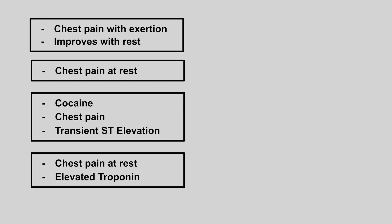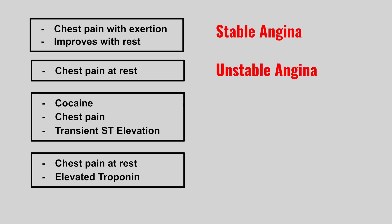The next one is chest pain with exertion that improves with rest — this is stable angina. The next one is chest pain at rest — this is unstable angina. The next one is someone who uses cocaine, has chest pain, and transient ST elevations.